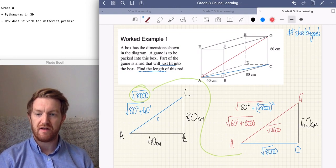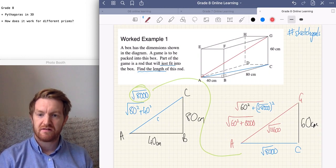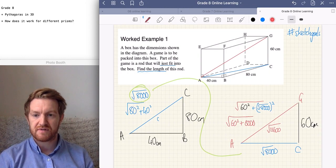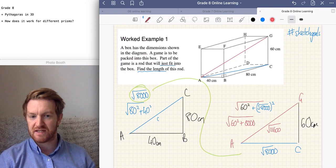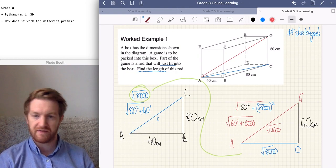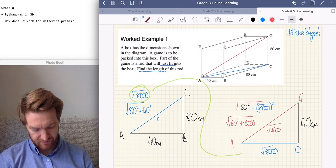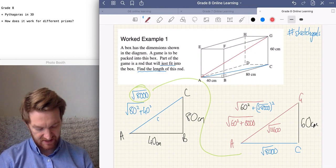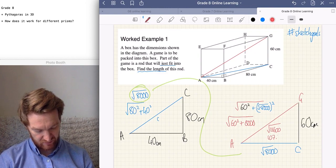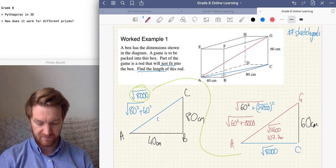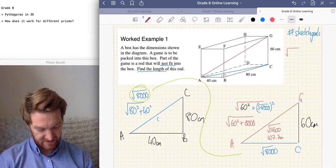You can either simplify this into 10 square root of 116, and then you can go further than that. Or we can write it as a decimal. We could do 107.7 centimeters.